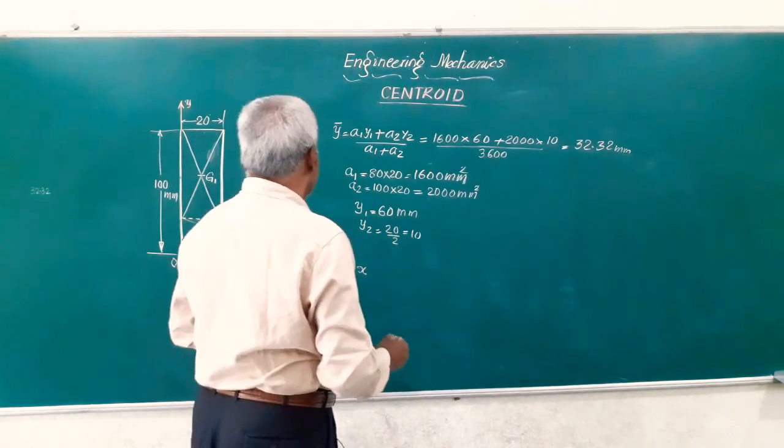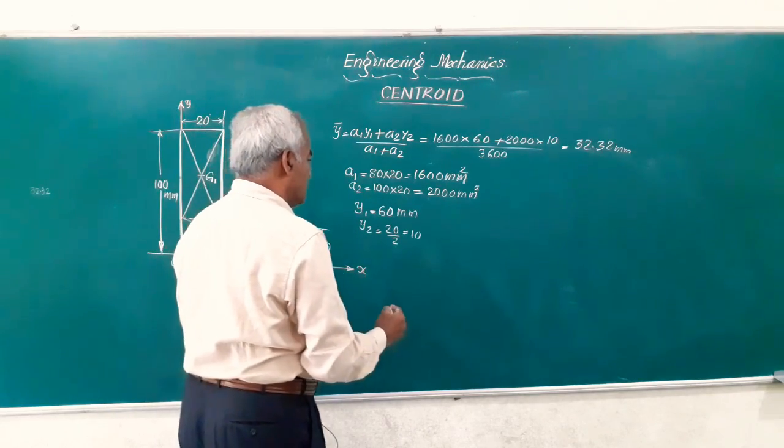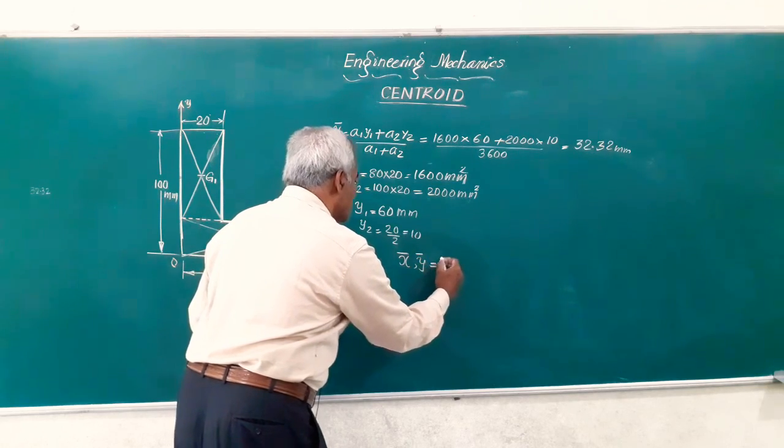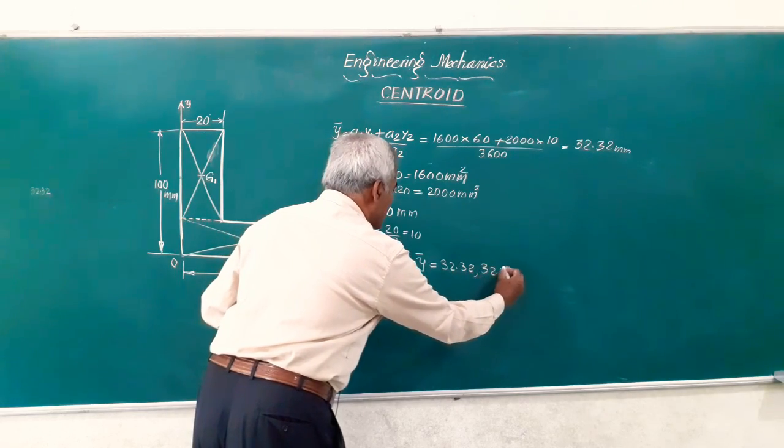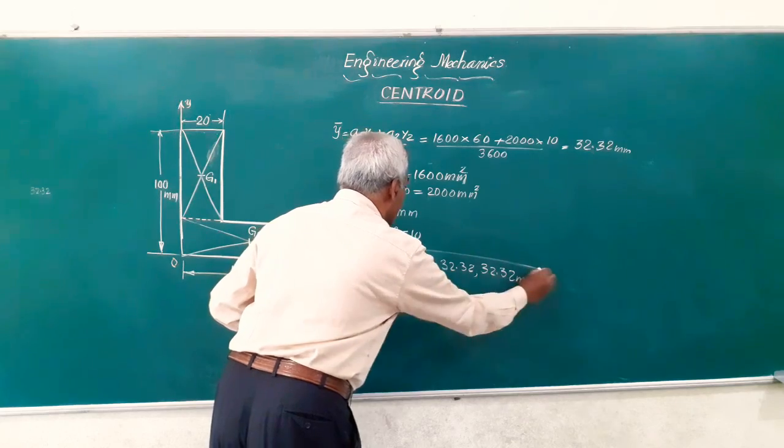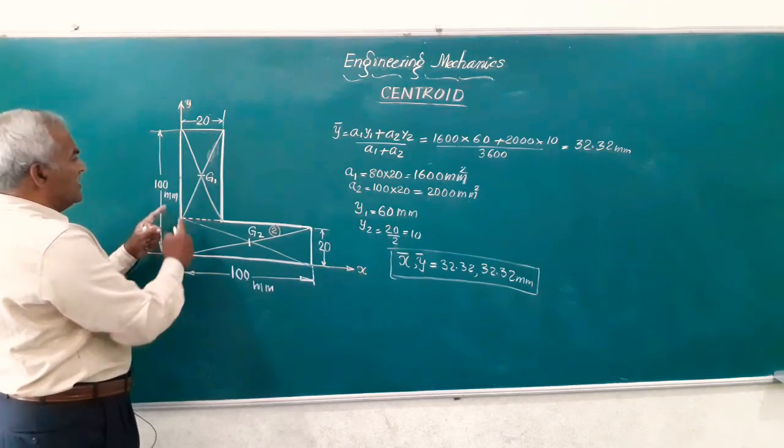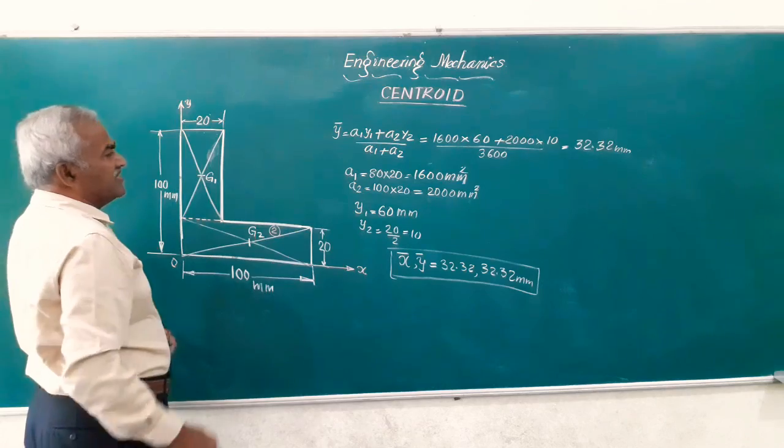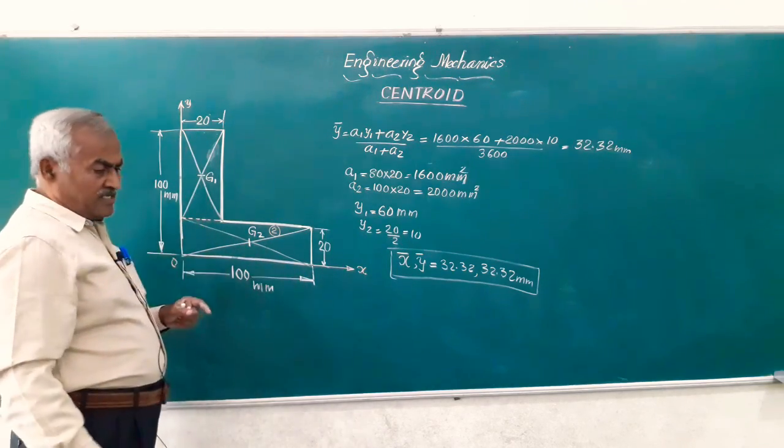Finally, you can write down friends, the centroid of this L-section or the angle section is given by x bar comma y bar is equal to 32.32 comma 32.32 mm. That is, for the whole section the centroid lies at a distance of 32.32 from the y axis and 32.32 from the x axis because these two arms have got the same dimension.